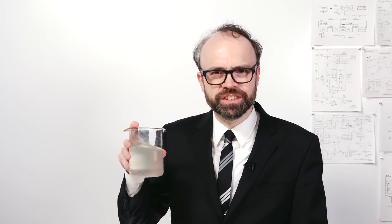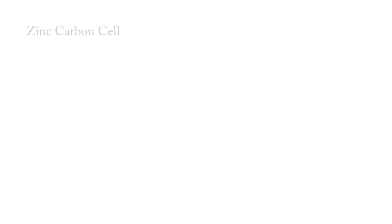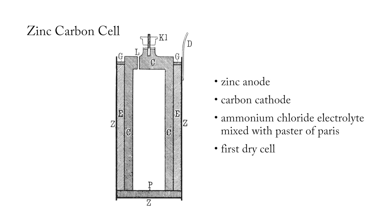So far, all of these early batteries have used liquid electrolytes, which pose pretty obvious challenges to portability. But in 1886, Karl Gassner created the first dry cell battery using an electrolyte paste composed of ammonium chloride and plaster of Paris. Because it didn't spill and could be used in any orientation, the zinc carbon cell opened the gates to many new portable uses, such as flashlights.